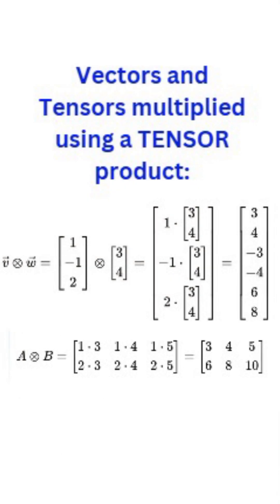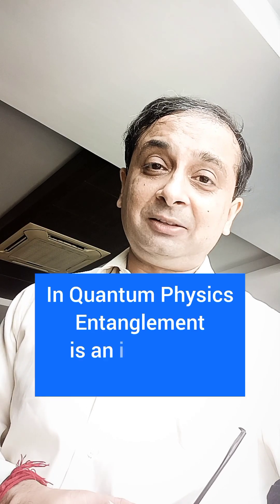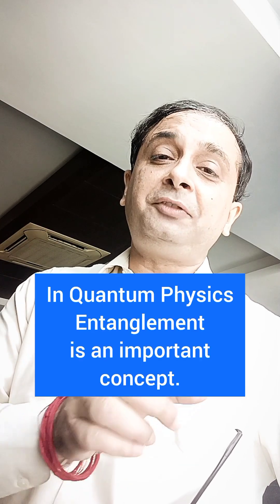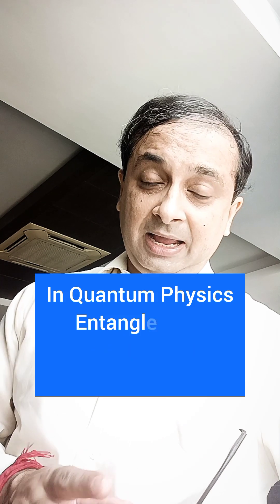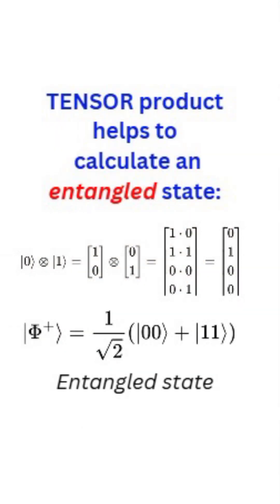The reason the tensor product is important is that it helps you measure what are called entangled particles. In quantum physics, entanglement is a very natural phenomenon. If you take a quantum state A and multiply it using a tensor product with B, then you can understand how the quantum particles are entangled.